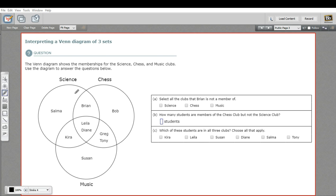So where the two circles overlap, science and chess, you have Brian here. So he's in both. And here in the very middle, you actually have all three circles overlapping. So these two people are in all three clubs. So they're pretty busy.